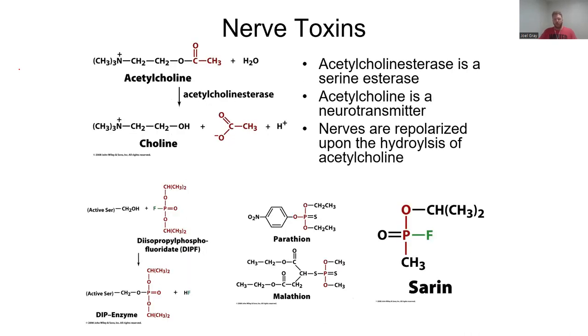That is the way that a number of different nerve toxins work. Acetylcholine esterase is a serine esterase. Acetylcholine is a neurotransmitter. Nerves are repolarized, so the presence of cations and anions, the balance of cations and anions inside versus outside of the cell are going to be flipped. Nerves are repolarized upon the hydrolysis of that acetylcholine.